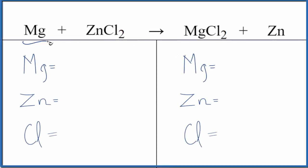Let's balance the equation for Mg plus ZnCl2. This is magnesium and zinc chloride. And we'll also take a look at the states and the type of reaction.